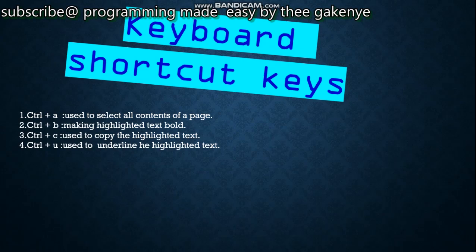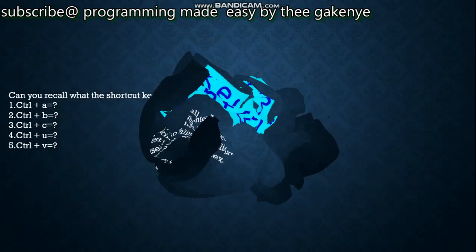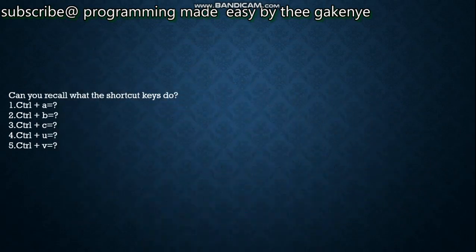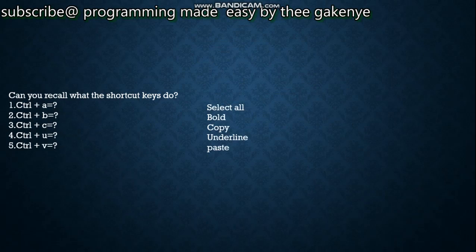Number four: Ctrl+U — used to underline the highlighted text. Number five: Ctrl+V — used to paste copied text. Now, can you recall what these shortcut keys do? Ctrl+A, Ctrl+B, Ctrl+C, Ctrl+U, Ctrl+V. The answers: Ctrl+A is for selecting all text, Ctrl+B is for bold, Ctrl+C is for copy, Ctrl+U is for underline, and Ctrl+V is for pasting.